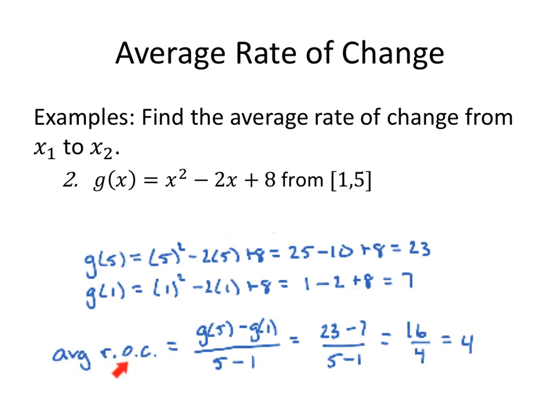My average rate of change, g of 5 minus g of 1 over 5 minus 1. 23 minus 7 over 5 minus 1. I'll simplify my numerator, 23 minus 7, and get 16. I'll simplify my denominator, 5 minus 1, and get 4. 16 over 4 is 4. This is interval dependent. This is a quadratic function. So the average rate of change will change depending on which values were given from the domain.